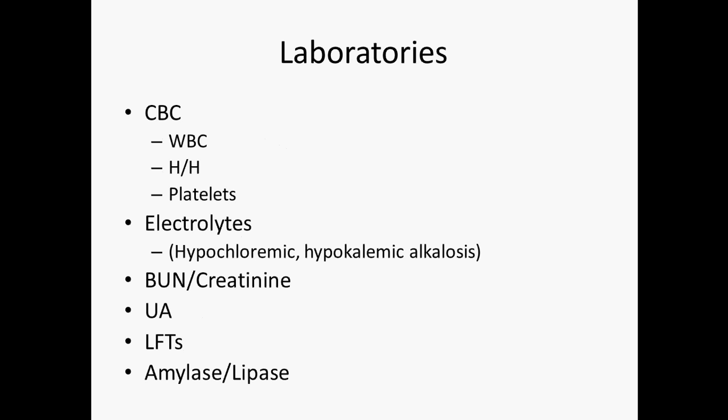We want to send lab tests out. Do a CBC including white blood cells, hemoglobin/hematocrit, and platelets. This can tip us off to infection or inflammation with the white blood cell count. Hemoglobin/hematocrit can give us an idea if there's bleeding within the intestines, and platelets can also point toward bleeding and other comorbid conditions.